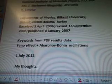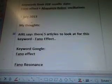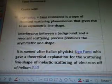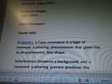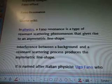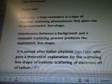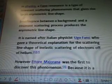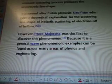January 2007, the keywords for Fano Effect and Aharonov-Bohm oscillations. Earl says there are five articles to look at for this keyword Fano Effect. In physics, a Fano Resonance is a type of resonant scattering phenomena that gives rise to an asymmetric line shape. Interference between a background and a resonant scattering process produces the asymmetric line shape. It is named after Italian physicist Ugo Fano. However, Ettore Majorana was the first to discover this phenomenon. Because it is a general wave phenomenon, examples can be found across many areas of physics and engineering.